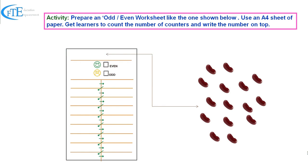Prepare an odd/even worksheet like the one shown below. Use an A4 sheet of paper. Get learners to count the number of counters and write the number on top. Here the number of counters is 15, so 15 is written on top of the paper.